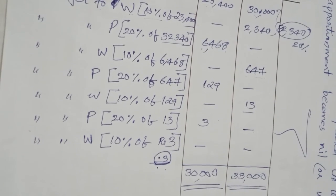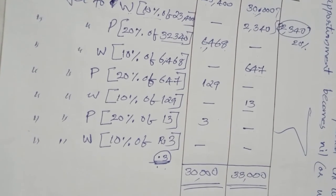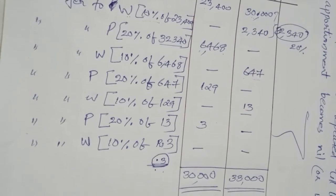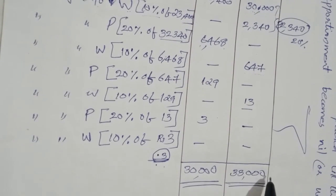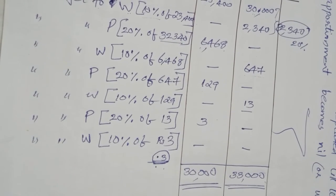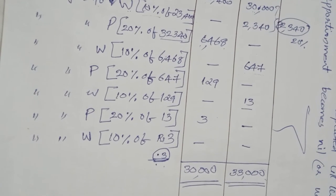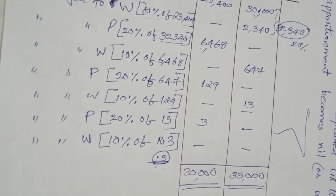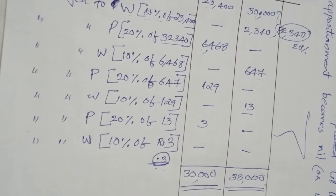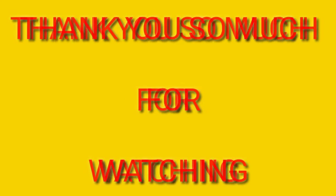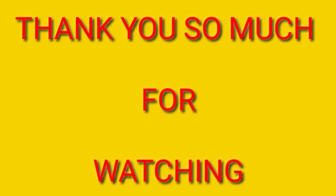Under service departments P and W, the total overhead cost as per the Trial and Error Method of secondary distribution of overheads has been calculated. This is the Trial and Error Method of secondary distribution of overheads. Thank you.